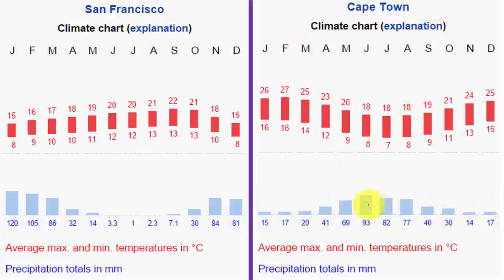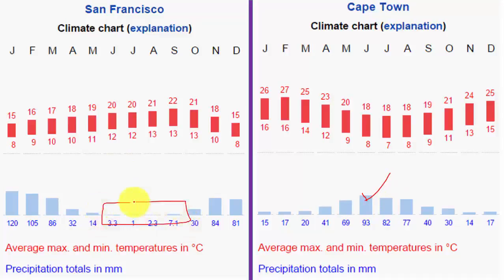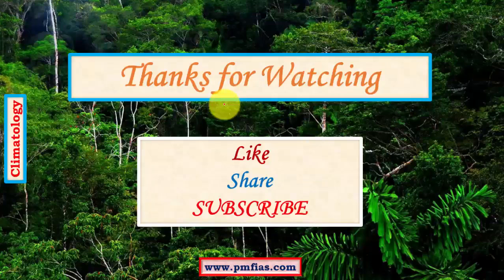Cape Town still shows winter maxima — in the southern hemisphere, winter falls in June and July, so rainfall is highest in those months. In the northern hemisphere graph (San Francisco), the oceanic influence is lower, so summer months are totally dry and winters show peak rainfall — typical Mediterranean. These climatic graphs are commonly shown in preliminary exams where you are asked to identify the climatic region, so pay close attention to them. This concludes the study of Mediterranean type of climate.